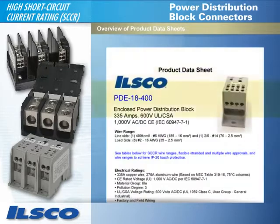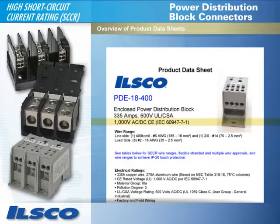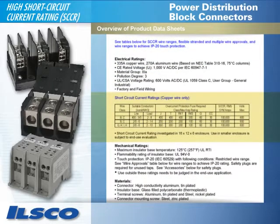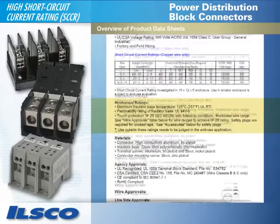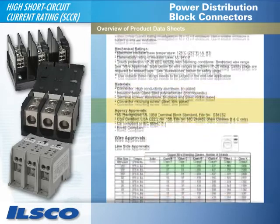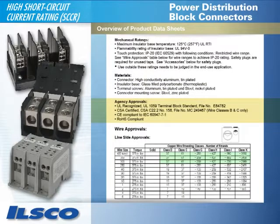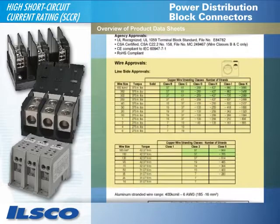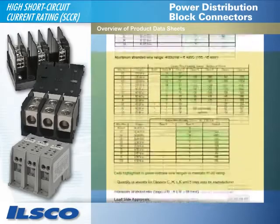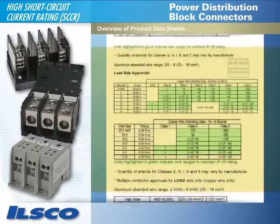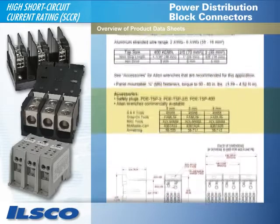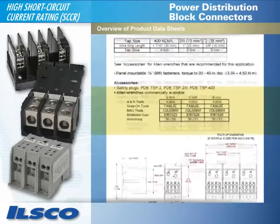Product data sheets include a general description of the block, including amperage and voltage ratings, as well as the wire ranges for high short-circuit current rating. The short-circuit current ratings chart identifies the fusing requirements for higher short-circuit ratings. Mechanical ratings, material descriptions, and agency approvals are also included. There are wire approval charts indicating approved wire and torque requirements for both line and load side. Optional accessories and block dimensions are also indicated.